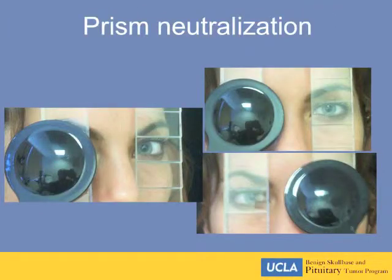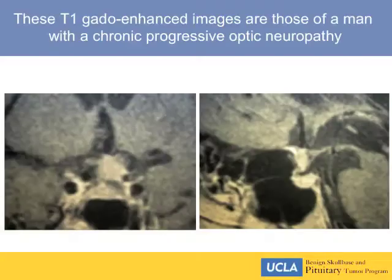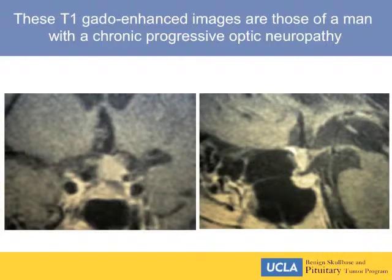In the ophthalmology clinic, we'll actually measure the angle of offset by prism neutralization, but most neurosurgery residents don't carry around prism bars. These T1 gadolinium-enhanced images are those of a man with a chronic progressive optic neuropathy, and you can see characteristics of a small meningioma which is compressing his left optic nerve.